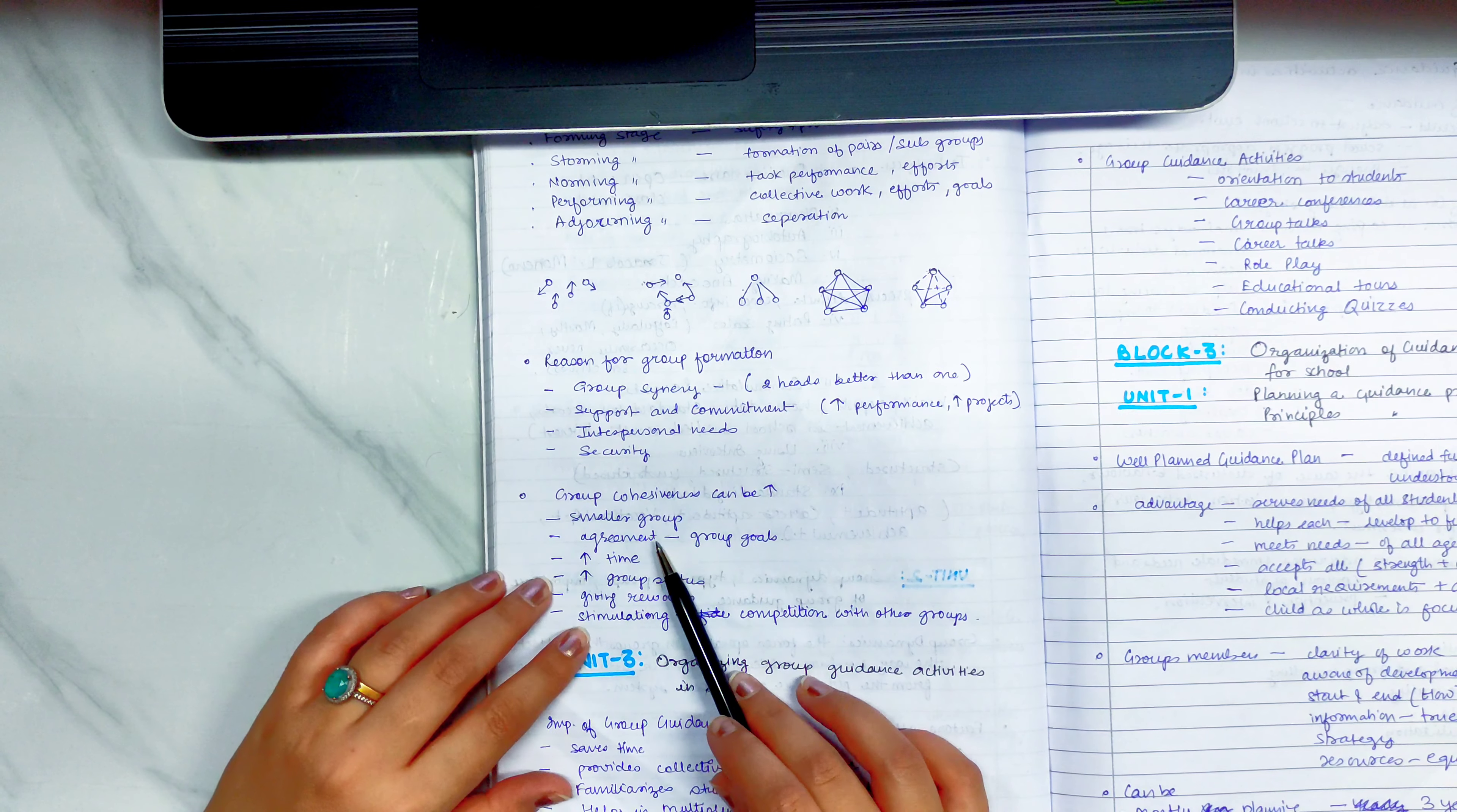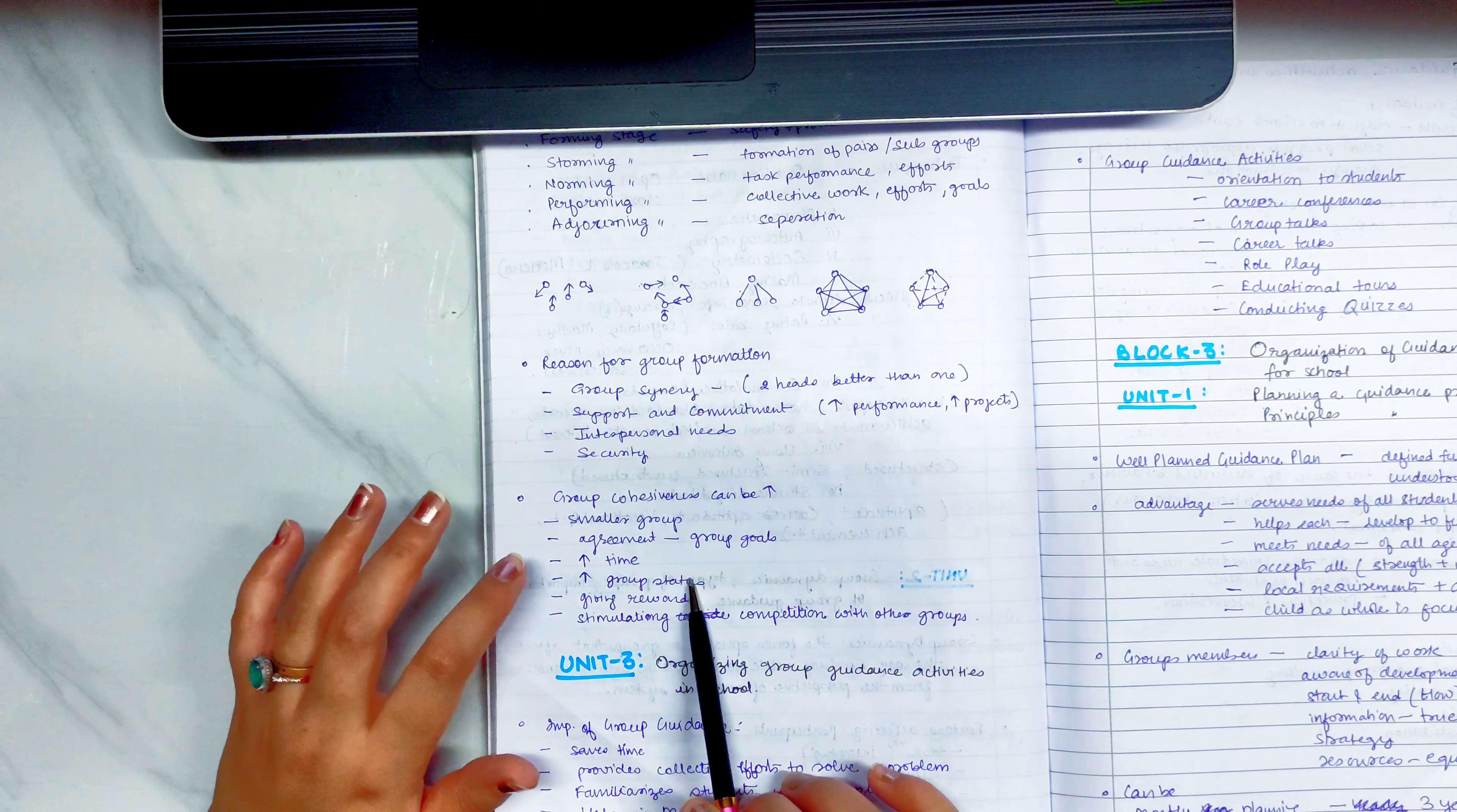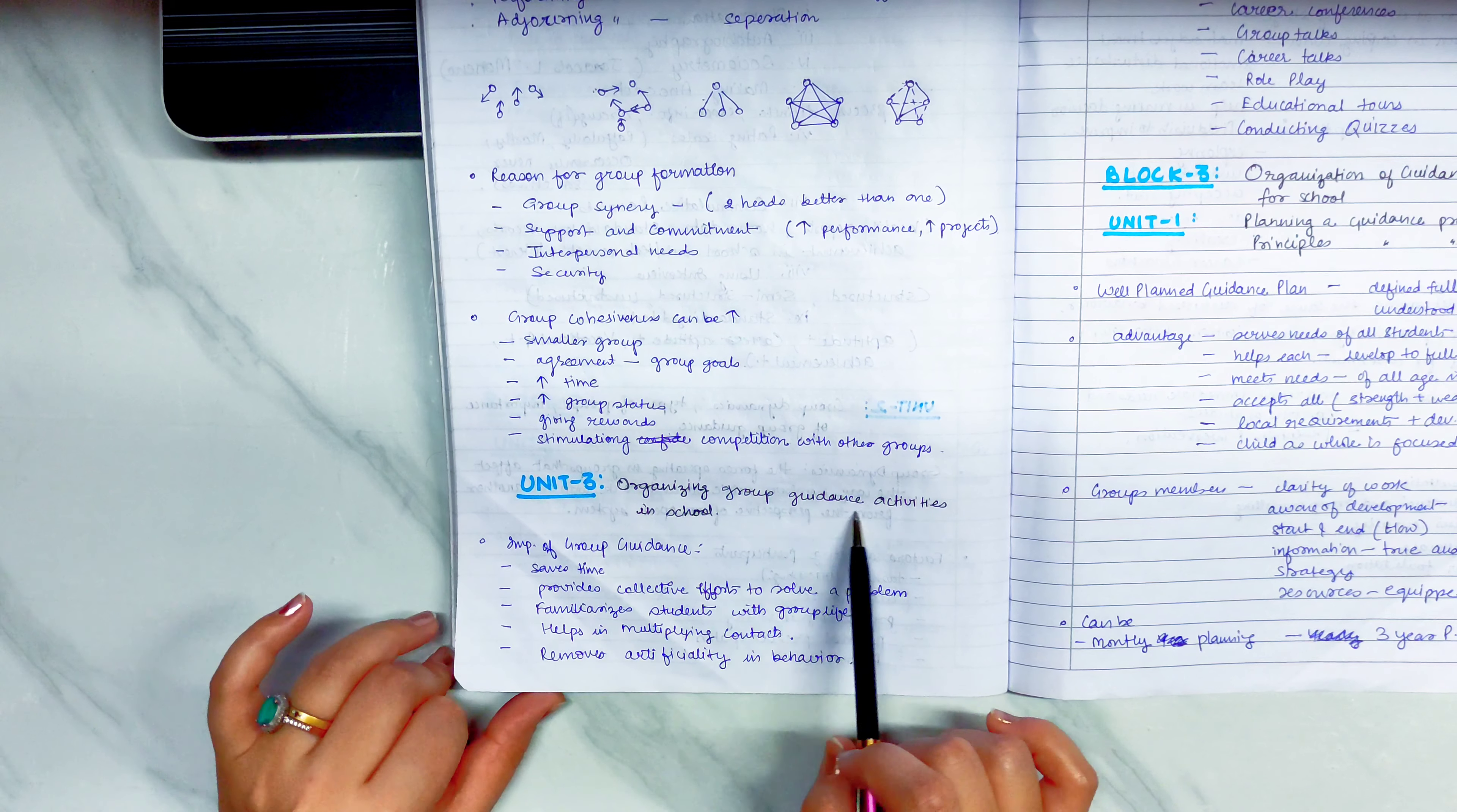Then group cohesiveness can be increased by smaller groups because smaller groups are much better. Agreement on group goals. If you have a good agreement then you can get better output. If you have more time, then you can increase cohesiveness. Group status if you have a good relationship with your other group naturally. Giving rewards at individual level and group level motivate and stimulating competition with other groups. This is the best. Your unit 2 is also over.